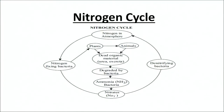Talking about the details of the nitrogen cycle — as you can see the flowchart — the nitrogen in the atmosphere is first picked up by nitrogen-fixing bacteria and then made available to plants and animals through the food chain. When plants and animals die and decompose, the dead organic material is acted upon by bacteria and converted to ammonia and then to nitrates. These nitrates are acted upon by denitrifying bacteria, and nitrogen is released back into the atmosphere.